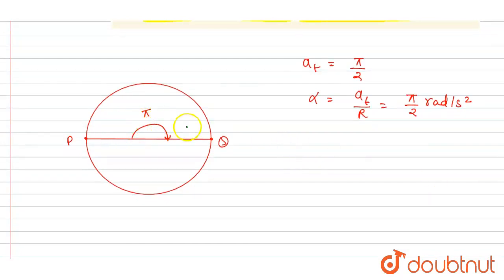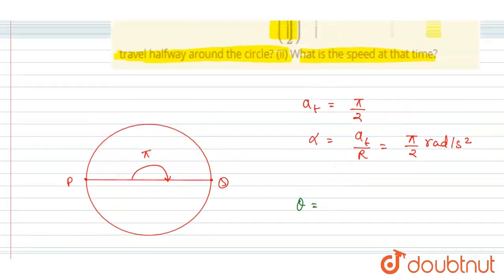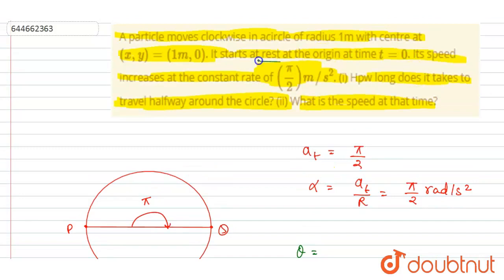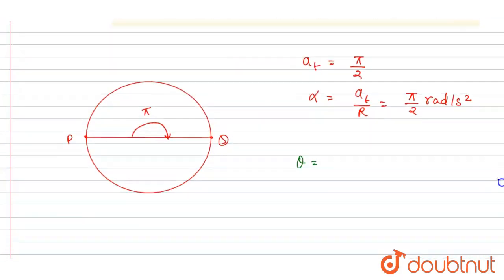if you see, we want the time, right? So we can write down the second equation of motion. Since initial velocity was zero, if you see it start from rest, right, so I will write half alpha t square.